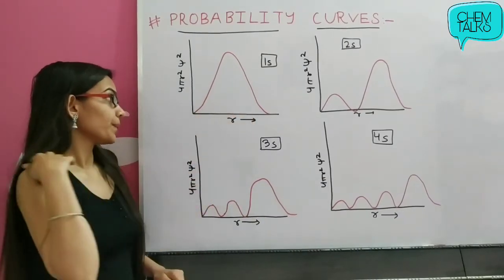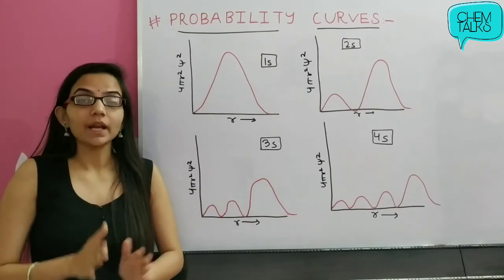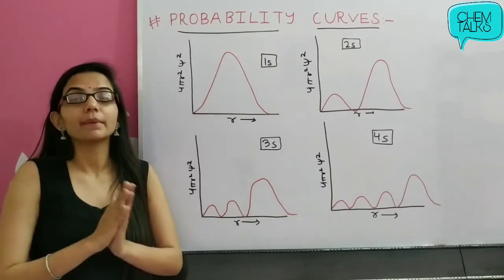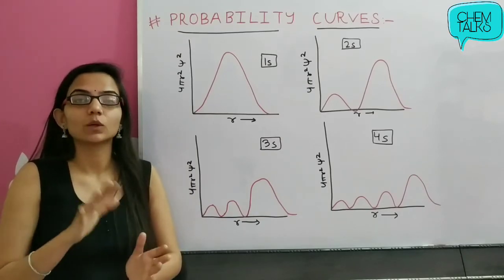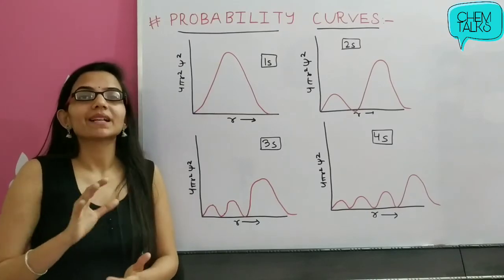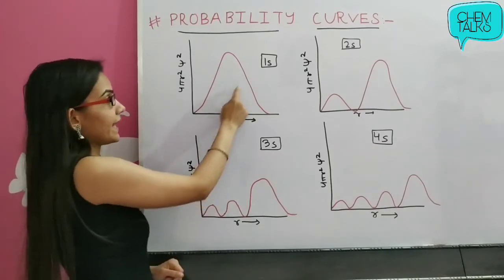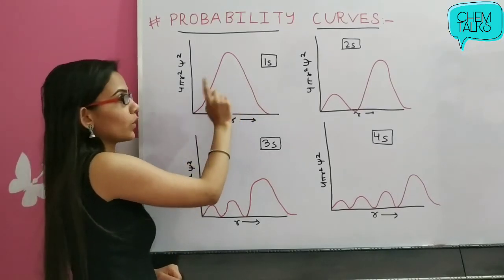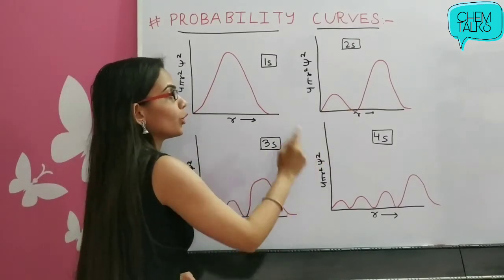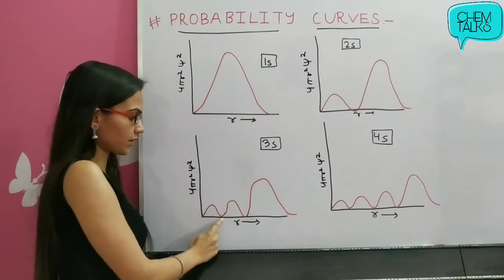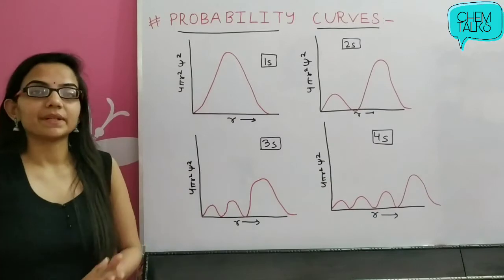So you can see a pattern: the principal quantum number is essentially applicable here. The maximum probability regions equal n, and the nodes equal n-1. For n=1: one maximum probability region, zero nodes. For n=2: two regions, one node. For n=3: three regions, two nodes. For n=4: four regions, three nodes. As we increase the principal quantum number, the broadness of the graph also increases.